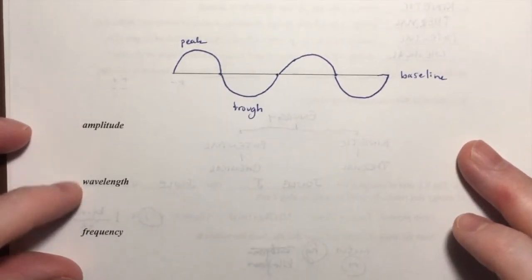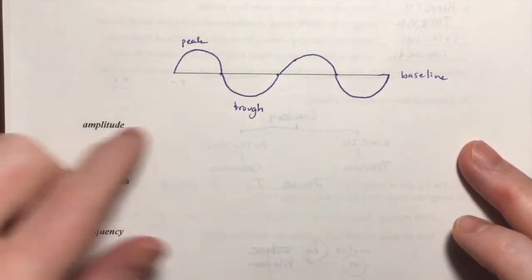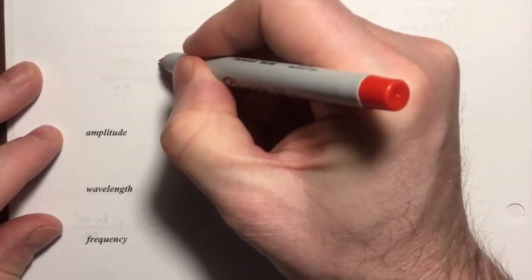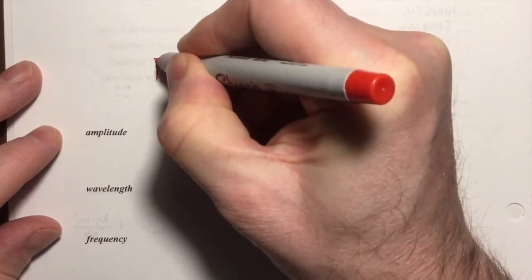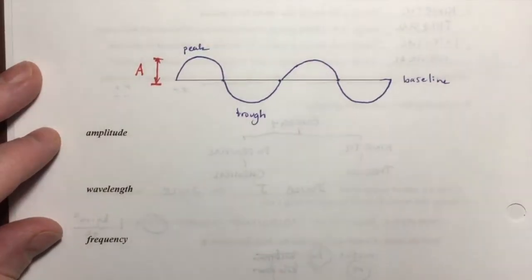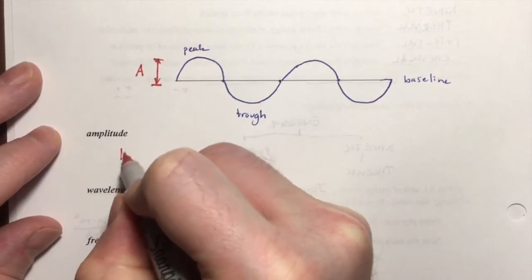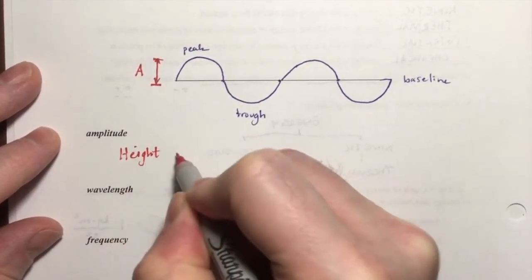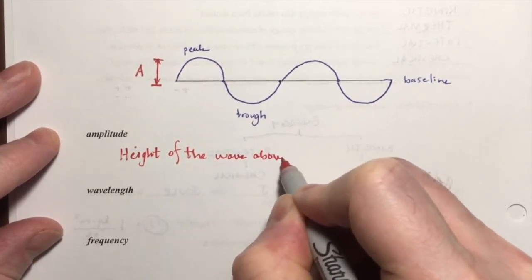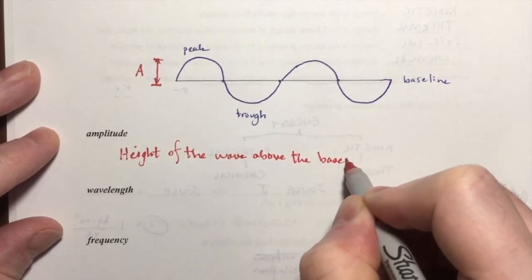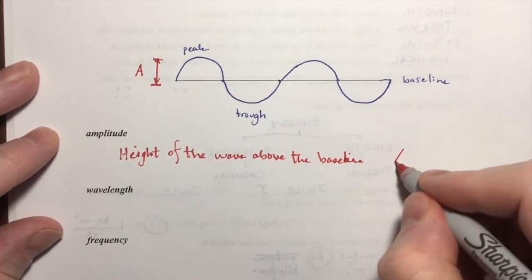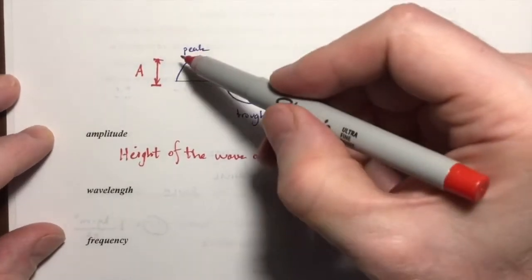And now there are three very important properties of these waves that I can label and measure. The amplitude is in red there, and the amplitude is the height of the wave above the baseline. And that's represented with a capital A, so that's the height of the peak above the baseline.